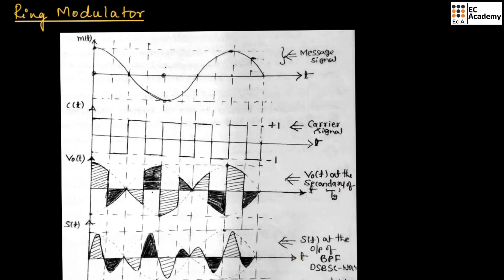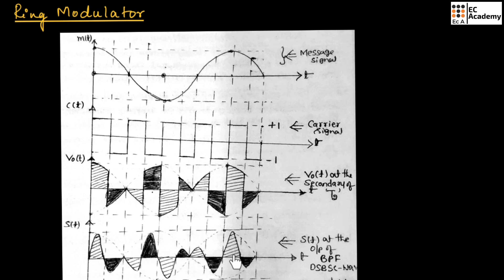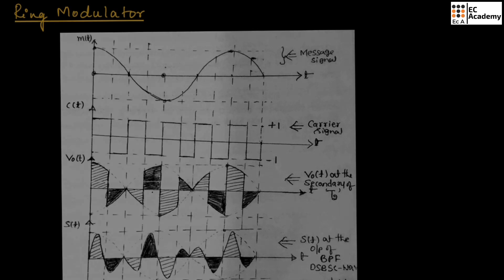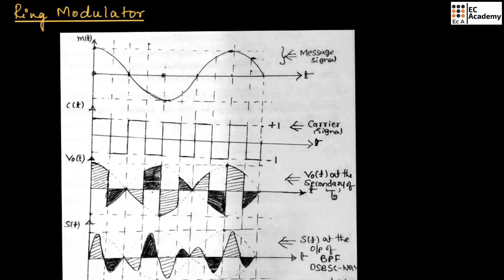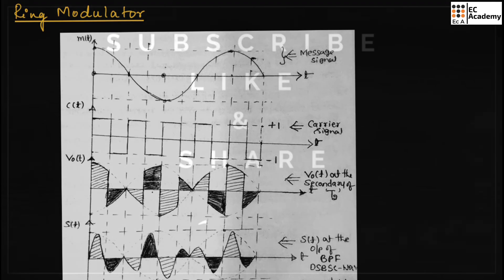Let us see the waveform of the ring modulator. This is the message signal and this is the carrier signal. This waveform represents the output of the secondary of transformer T2, which is V0(t). And this is the output of the band pass filter, which is the double sideband suppressed carrier waveform. This is about the ring modulator. Hope you have understood the topic. Thank you.